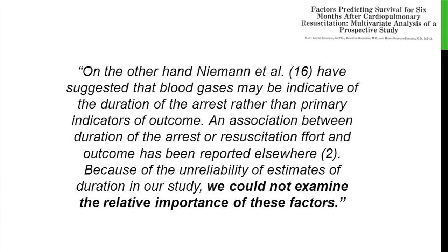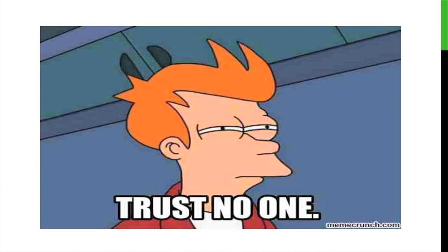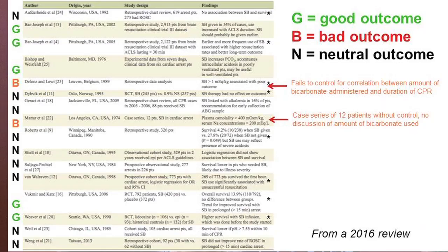The residents probably recognize this meme — trust nobody. This is from a 2016 review of previous studies on sodium bicarb use. The letters on the side indicate the study outcomes: black N's are neutral, G's are good, and B's are bad. Of the two bad studies, one failed to correlate for length of CPR and outcome. The other was a case series of only 12 patients claiming average plasma osmolality greater than 400 milliosmols per kilo and sodium concentrations up to 200 milliequivalents per liter, but there's no indication of how much sodium bicarb they actually gave those patients.